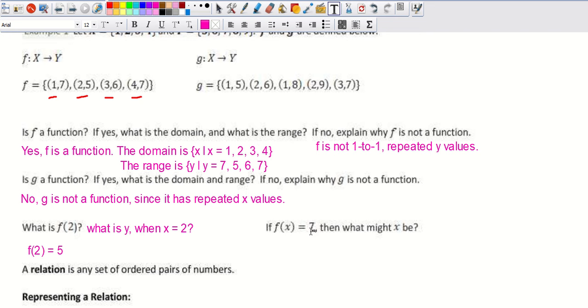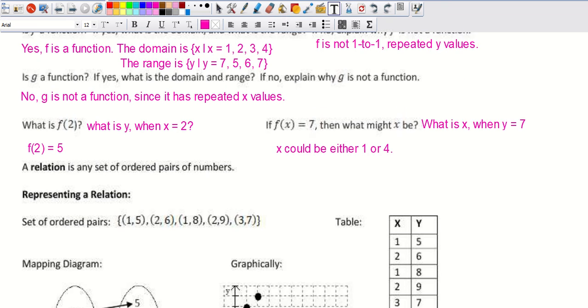And then we would say if f of x is 7, then what might x be? So this question is kind of flipping this and saying, what is x when the y value is equal to 7? So we're going to go look at the y values this time. And we can see there's two possible answers. So we could say x could be either 1 or 4. There's two answers there.